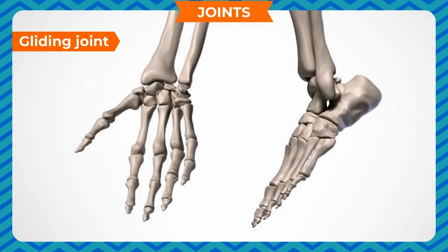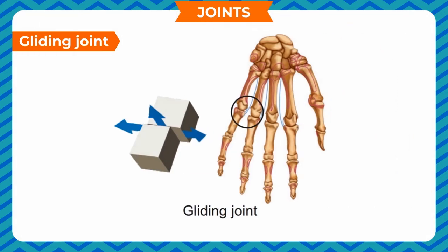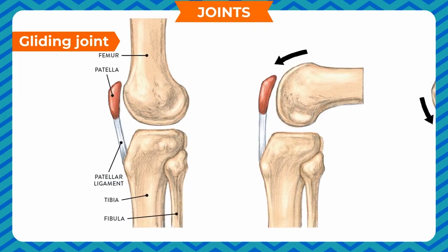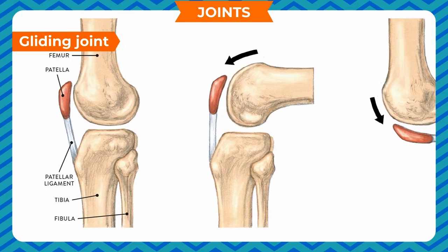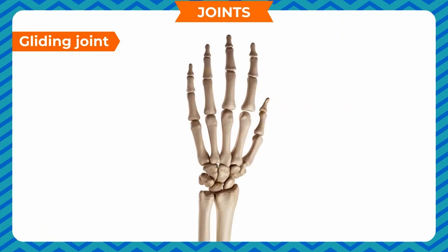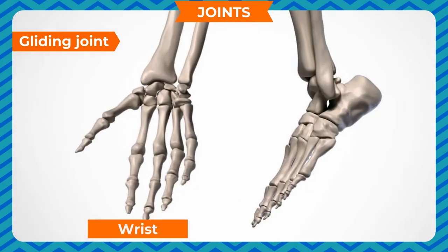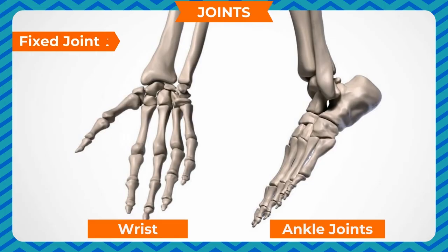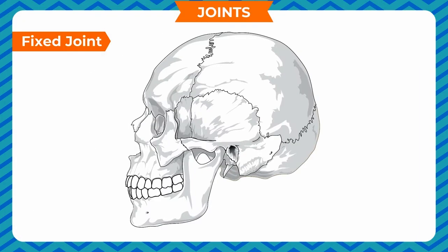Gliding joint: The wrist or ankle joints have flattened ends of bones that can glide against each other. These joints allow side-to-side as well as backward and forward movement. The vertebrae also have similar joints that allow slight movement. Such joints are called gliding joints. Location: wrist and ankle joints. Fixed joint: A fixed joint does not allow any movement; it is present for the sake of protection. Location: bones of the skull.